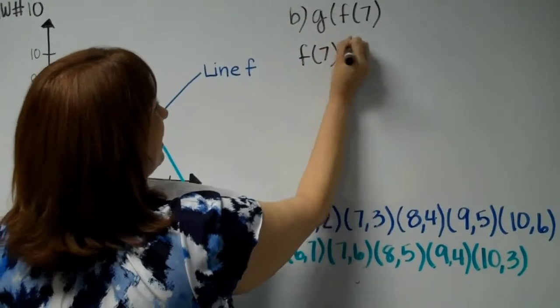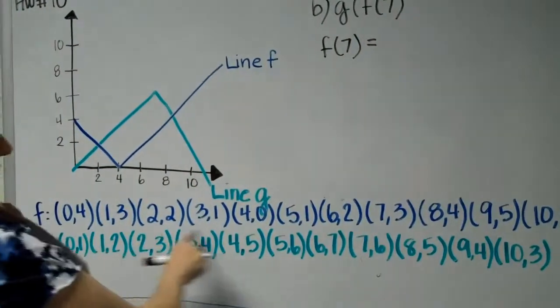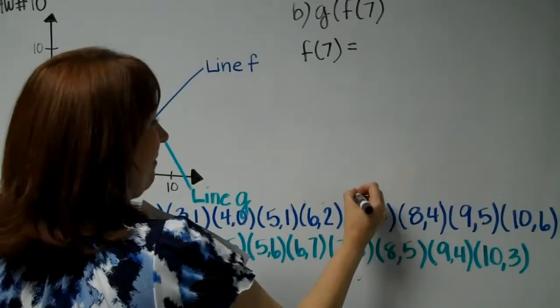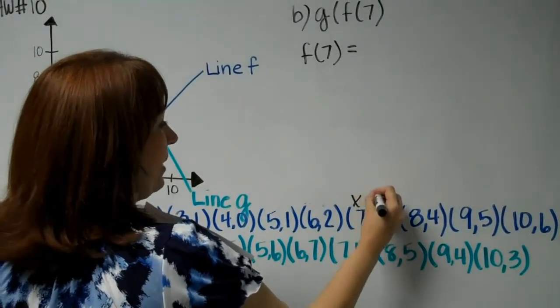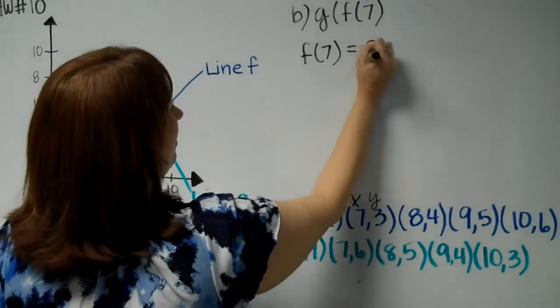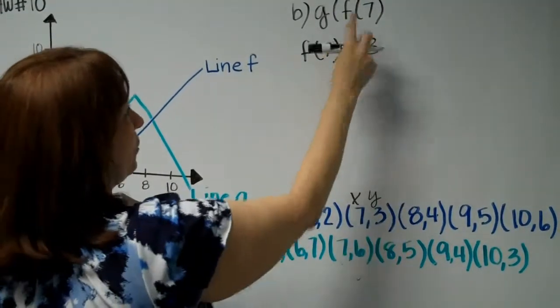F of 7 equals—go down to line F, look for the X coordinate 7. The Y coordinate is 3. So now you have your 3.